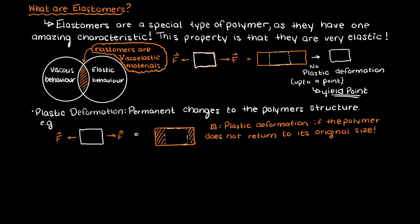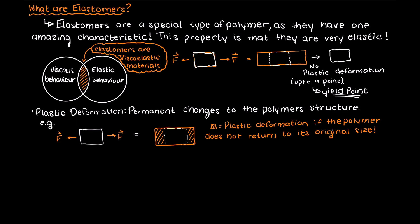We should talk about what gives elastomers this very flexible and elastic property. If you remember back to one of our previous videos on thermoplastic and thermoset polymers, link in the description below, you will remember that we talked about the crosslinking of polymers.